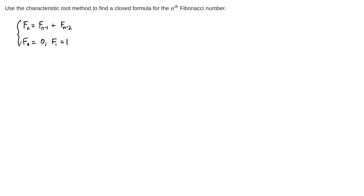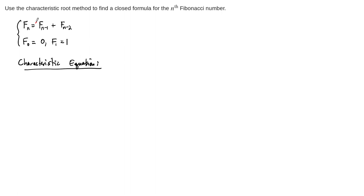We went over the characteristic root method in the last video. The first step is to write down the characteristic equation. This comes from taking the coefficients — in this case, 1 and 1 — and subtracting them over. What we end up with is the quadratic equation r² − r − 1 = 0.